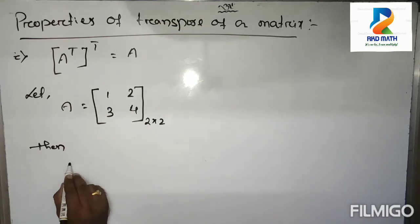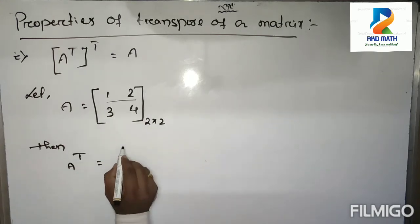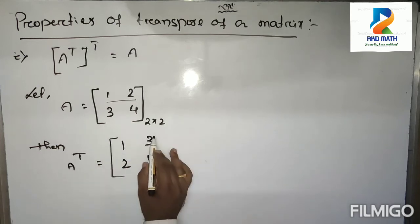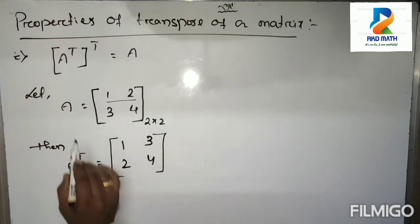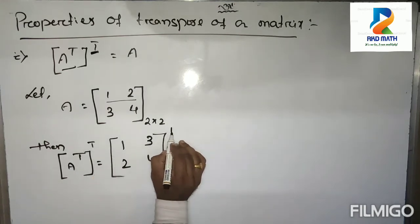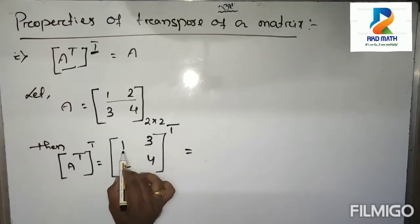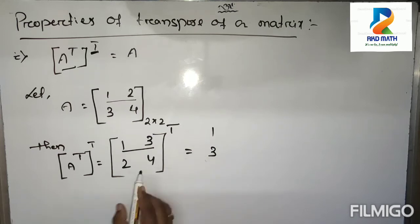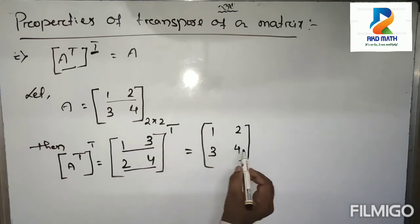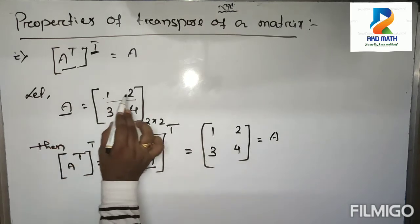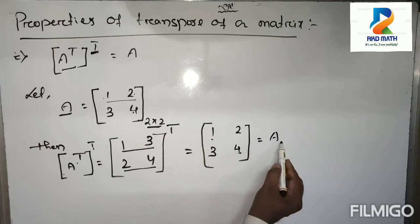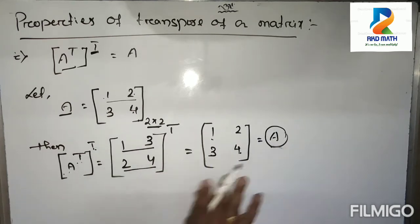Then A transpose equals: first row becomes first column giving 1, 3; second row becomes second column giving 2, 4. Now taking A transpose whole transpose — that is the transpose of this result — first row becomes first column and second row becomes second column, giving 1, 2, 3, 4 again. So A equals 1, 2, 3, 4 and (A^T)^T also equals 1, 2, 3, 4. Therefore A transpose whole transpose equals A. Proved.